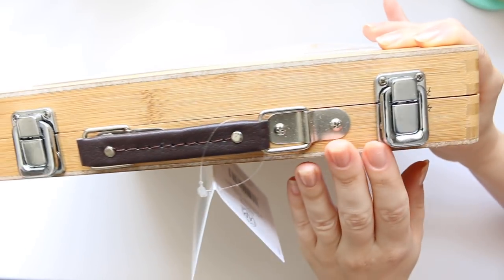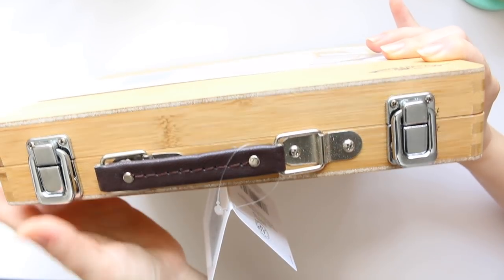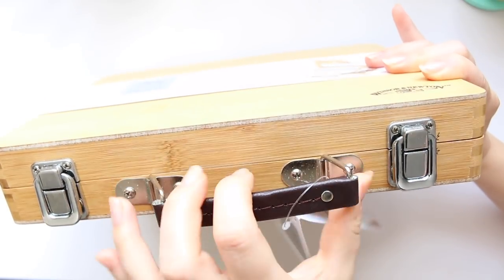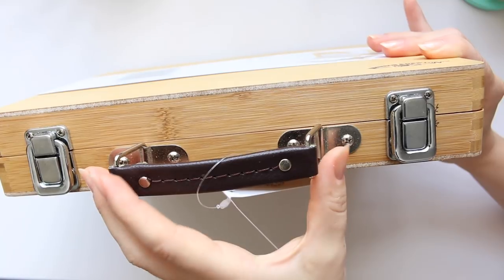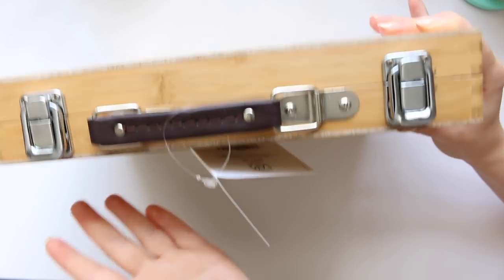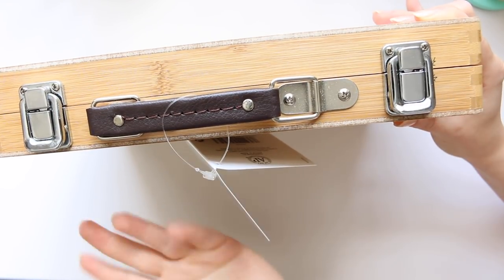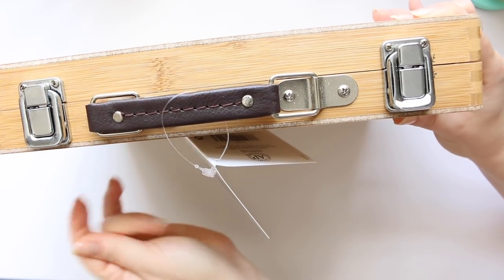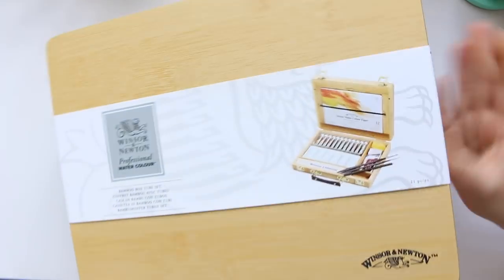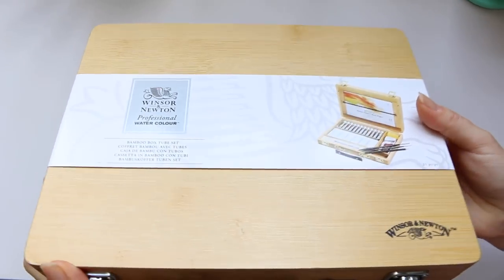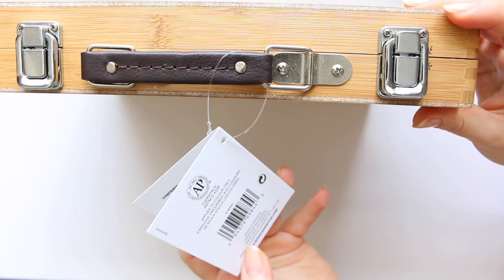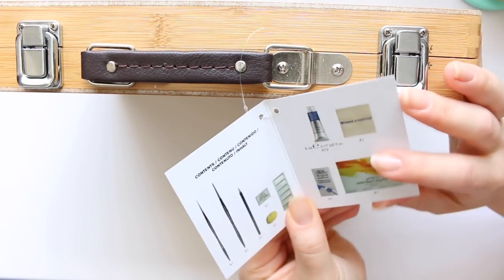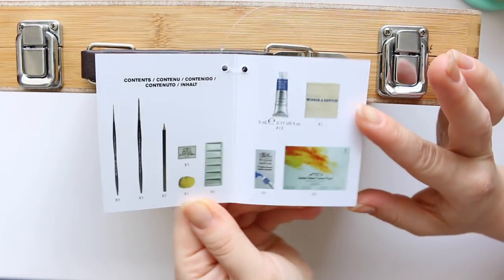There is a little handle here so it can be carried around. It's great to take outdoors if someone wants to paint in the garden or anywhere else. It is quite heavy because it's real sort of wood or real bamboo, and then here you get a little label that tells you what's inside.